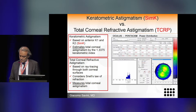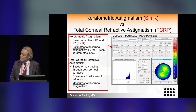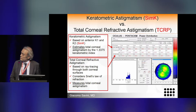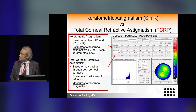You can get these measurements in the power distribution display, where the keratometric astigmatism K1 and K2 is shown in the first row and the total corneal refractive power and astigmatism is shown in the third row. This is what we usually use for toric calculations.